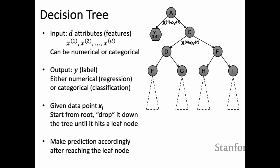For decision trees, given D-dimensional attributes (numerical or categorical) we predict some output label Y. Given a data point, we start from the root and at each node apply a splitting criterion to go left or right, continuing until we reach a leaf node where we make a prediction. There are three questions: how do we split at a node, when do we stop splitting, and how do we make predictions at a leaf.